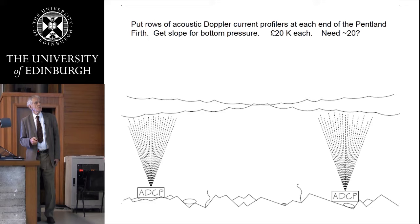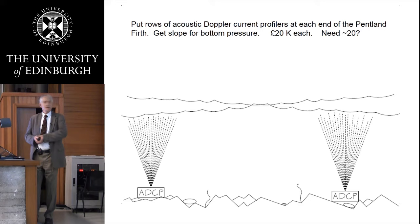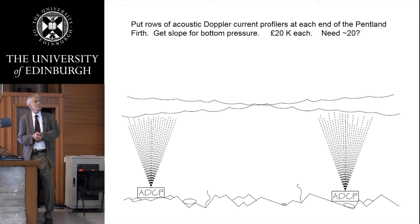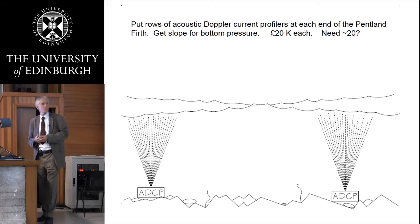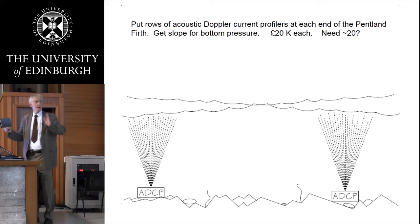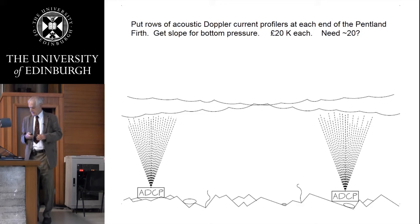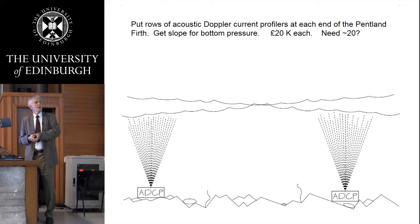The very obvious way to measure this is to use something like an acoustic Doppler current profiler. This instrument measures the velocity of the water at different depths above it, and also has inside a little pressure transducer for storing pressure signals for about a month. What we want to measure is the slope of the water surface — the slope coming down in one direction of the tide, and the slope in the other direction. If you put a row of maybe 20 acoustic Doppler current profilers along the entrance and exit of the channel and measure the slope of the water, you'd know exactly the velocities and pressures. They cost about £20,000 each, so it's not cheap, but it gives you valuable data.